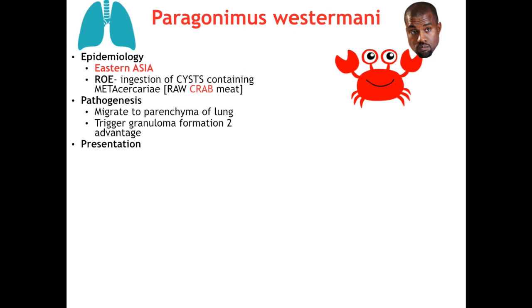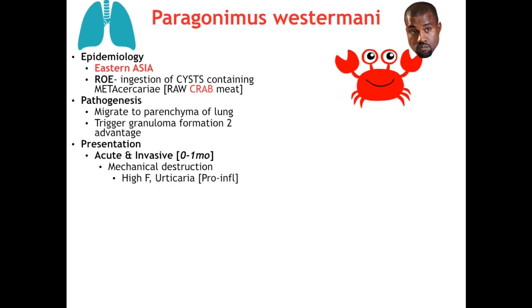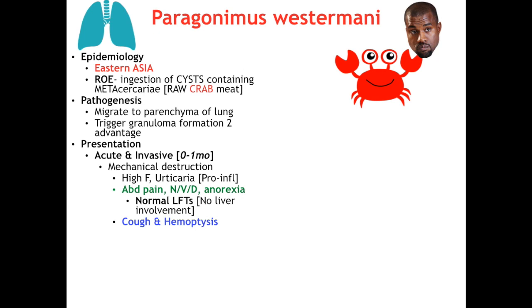The main route of egg exit for P. westermani is through sputum; diagnostically we look for eggs in a sputum sample or on bronchoalveolar lavage — though some literature suggests eggs can be swallowed and passed in stool. In the acute and invasive phase, mechanical destruction from juvenile flukes migrating to the lung parenchyma presents with high fever, rash, and abdominal pain. What sets this disease apart is the lack of liver involvement — P. westermani is the only fluke to not use the liver at all — so you will have normal LFTs, no hepatosplenomegaly or ascites.